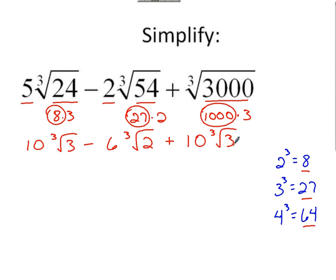Join your like radicals here. Got a couple of them. We're adding them together in this case, so we've got 20 cube roots of 3 minus 6 cube root of 2.